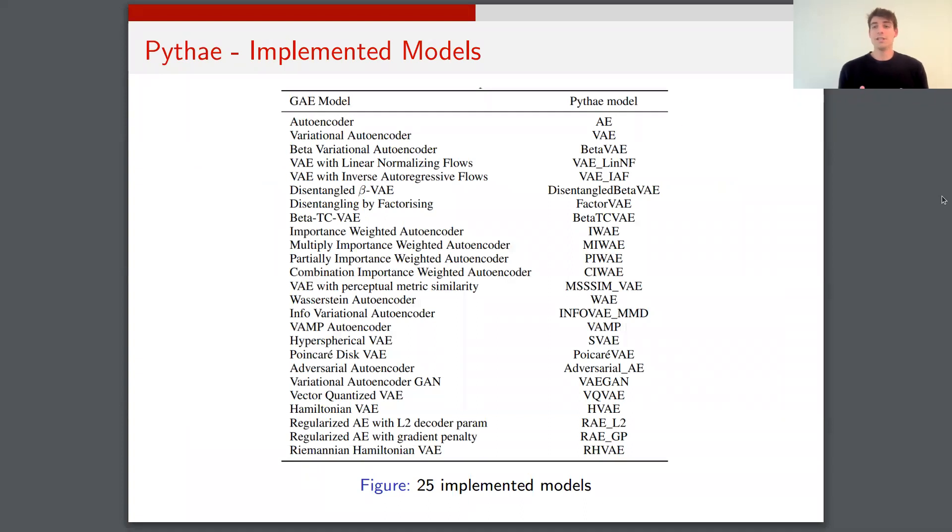So here you've got the list of the models that are actually implemented in Pythae. So there are 25 models that are currently implemented in the library, and most of which we were able to reproduce the original results provided in the papers.